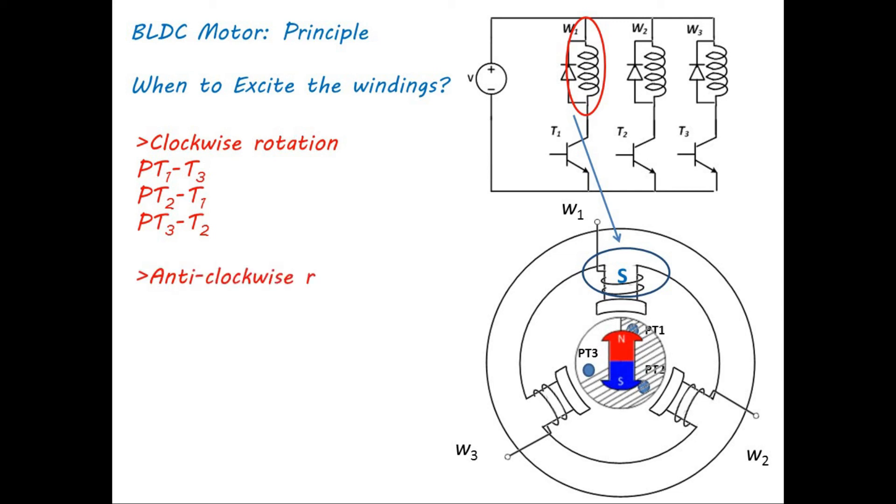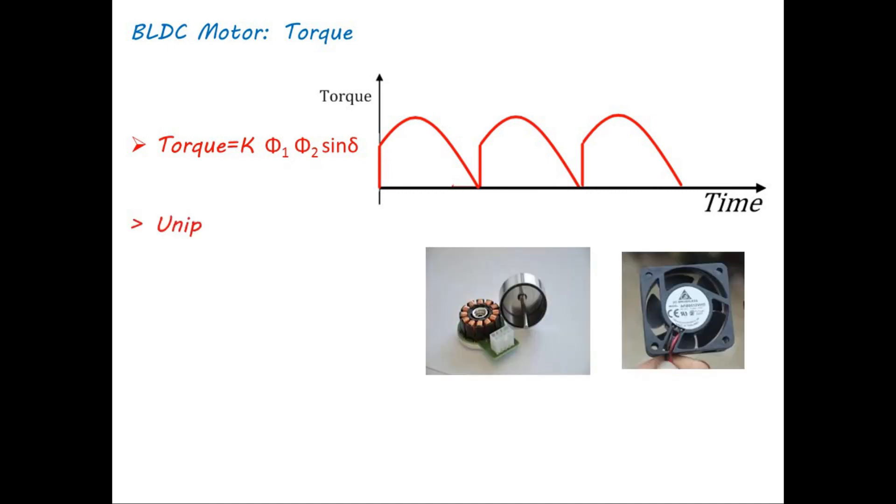For anti-clockwise rotation, phototransistor connection needs to be updated. Note that this arrangement of transistor switch allows only unidirectional current, and at any time only one winding is excited. If we draw the plot of torque versus time due to angle variation, torque fluctuation is observed. For low performance applications such as CPU fan, this arrangement can be used.